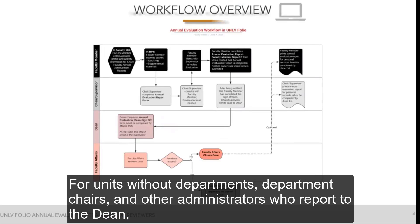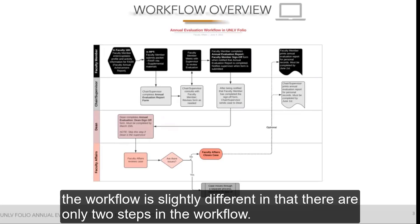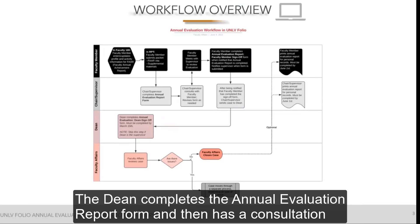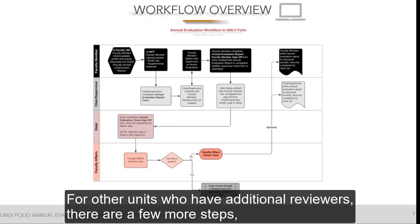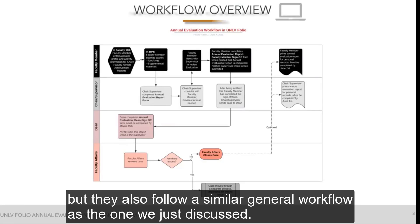For units without departments — department chairs and other administrators who report to the dean — the workflow is slightly different in that there are only two steps. The dean completes the annual evaluation report form, has a consultation with the faculty member, and then the case is considered fully executed. For other units with additional reviewers, there are a few more steps, but they follow a similar general workflow.